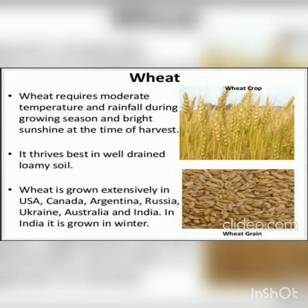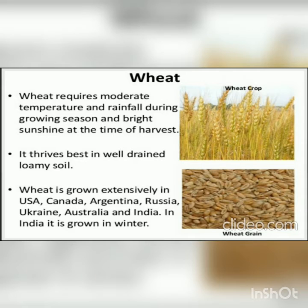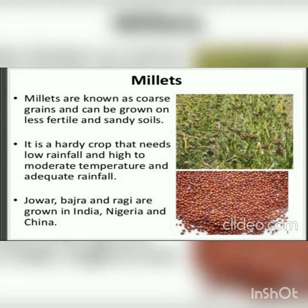Wheat requires moderate temperature and rainfall during the growing season and bright sunshine at the time of harvest. It grows best in well-drained loamy soil. Wheat is grown in USA, Canada, Argentina, Russia, Ukraine, Australia, and India. In India, it is grown in the winter season.